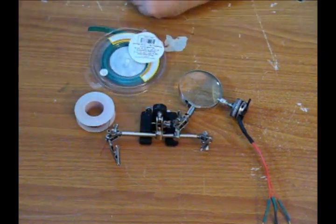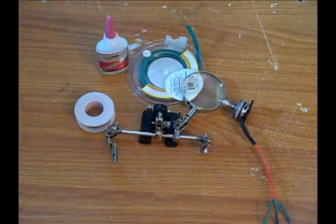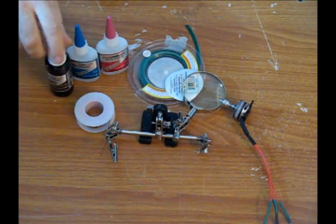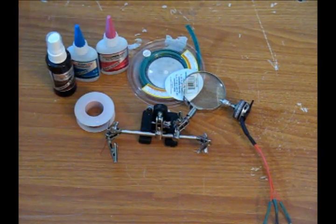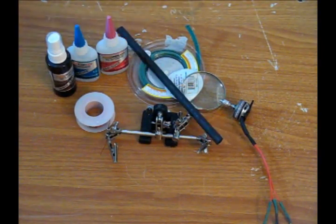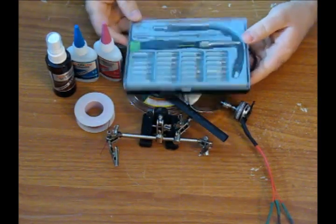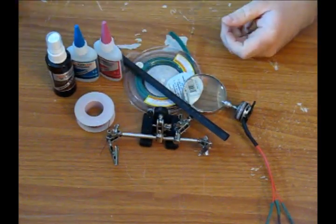Heat shrink tubing, 4 millimeter works great. I'm using a little bit larger than that, a couple of different kinds of CA and some CA kicker for insulation and to hold my wires in place. Then a large piece of heat shrink tubing to go around the whole bundle and a small screwdriver set.